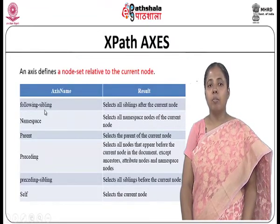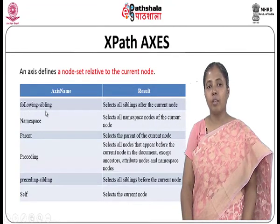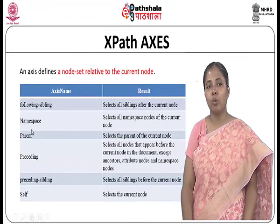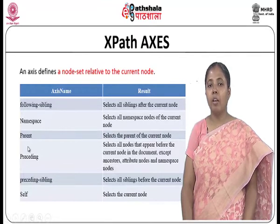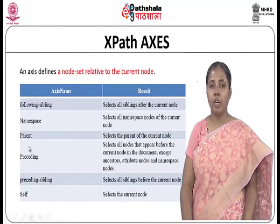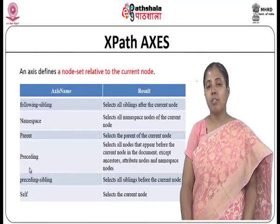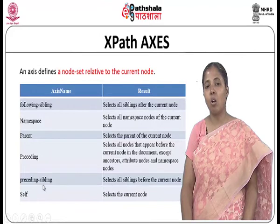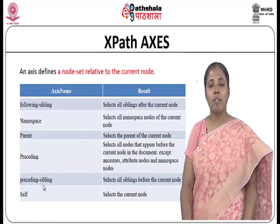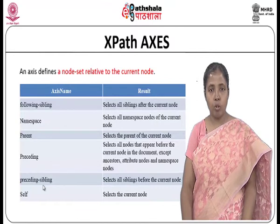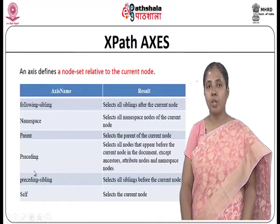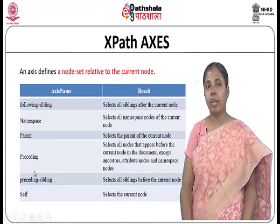Other axis names include: following-sibling — selects all siblings after the current node; namespace — selects all namespace nodes; parent — selects the parent of the current node; preceding — selects all nodes that appear before the current node except ancestors, attribute nodes, and namespace nodes; preceding-sibling — selects all siblings before the current node; self — selects the current node. These axis names are used to give relative path expressions.